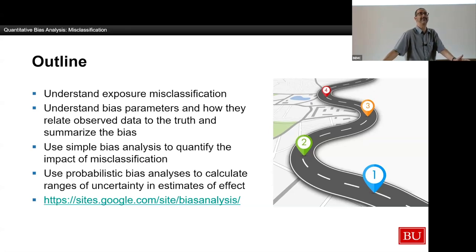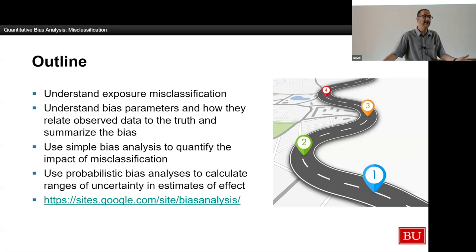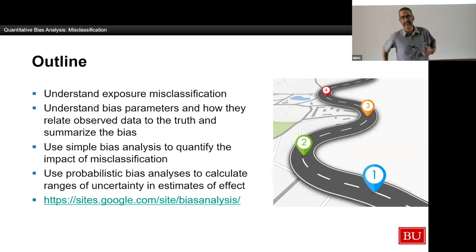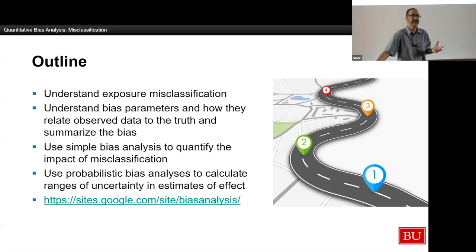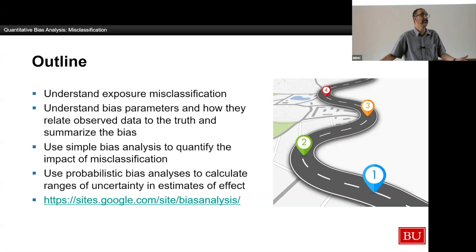So what I want to talk about is exposure misclassification as a way to think about misclassification in general. I'm going to talk about misclassification — not the more general measurement error — meaning I'm not going to focus on continuous variables. I'll stick to categorical variables, particularly dichotomous variables, but everything I say can be extended to other variables. I'll use that to think about simple and probabilistic bias analyses as ways to quantify the impact of sources of systematic error.